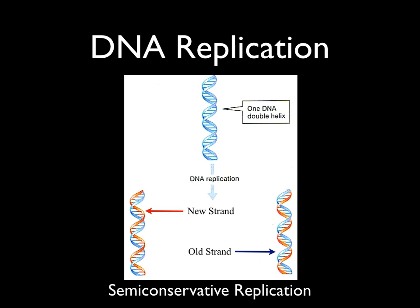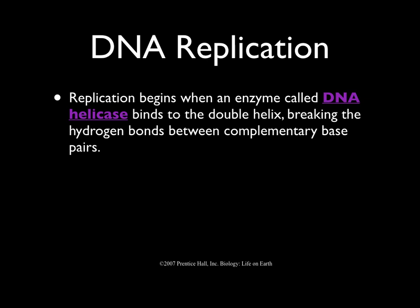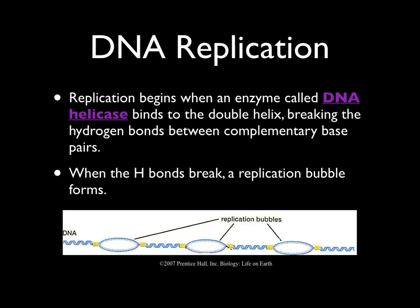This DNA double helix doesn't magically pull itself apart and copy both strands. To do this, the DNA needs help in the form of a special set of enzymes. DNA replication begins when an enzyme called DNA helicase binds to the double helix and breaks the hydrogen bonds between the complementary base pairs. When those hydrogen bonds are broken, a replication bubble forms. Once that replication bubble is formed, that leaves room for another enzyme to move in and attach to both of the exposed DNA strands.